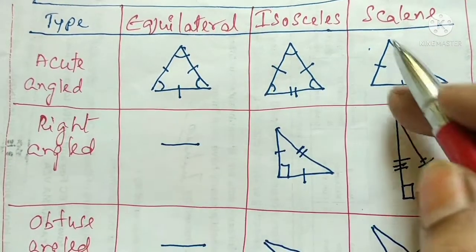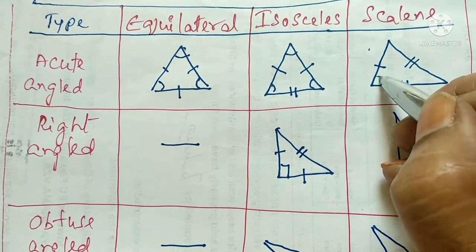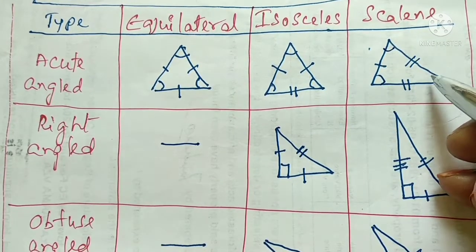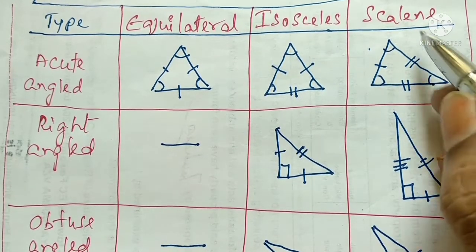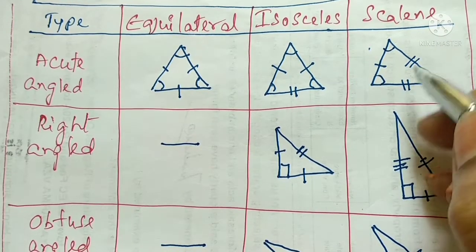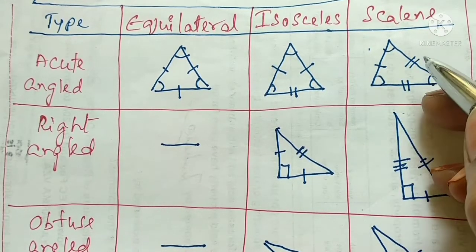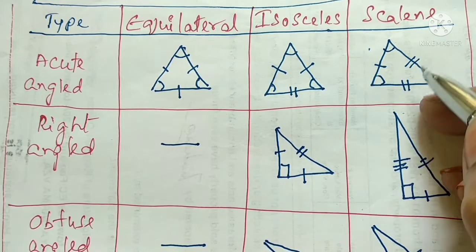For the acute angle triangle, all three angles are less than 90 degrees. For the scalene type, all three sides are of different lengths.